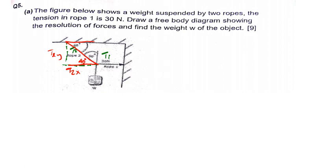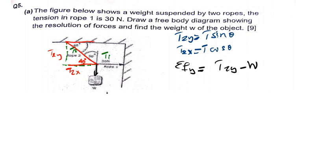Using SOHCAHTOA, T2Y is T sine theta. Now, let us first, we are trying to find W and W is in Y. The summation of all the forces in Y direction. We have got T2Y pointing upward minus W, which is pointing downward. This one will be pointing downward. We have got the mg there. That is the weight.